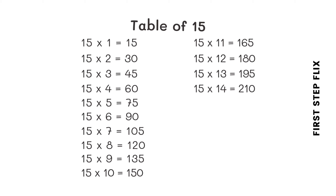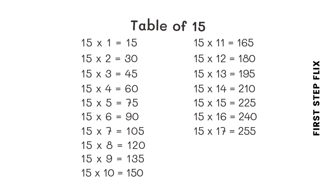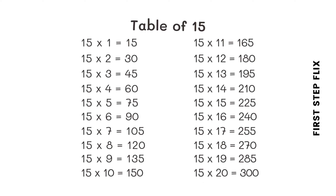15 fifteens are 225. 15 sixteens are 240. 15 seventeens are 255. 15 eighteens are 270. 15 nineteens are 285. 15 twenties are 300.